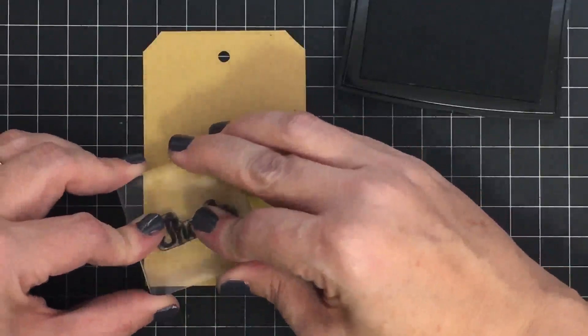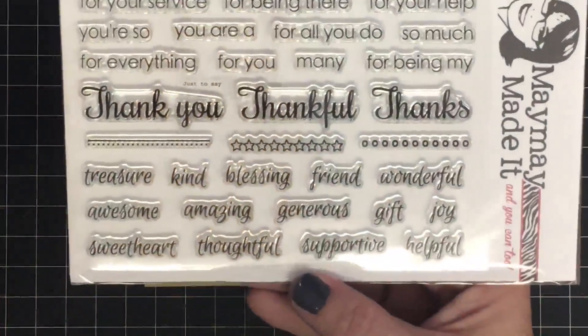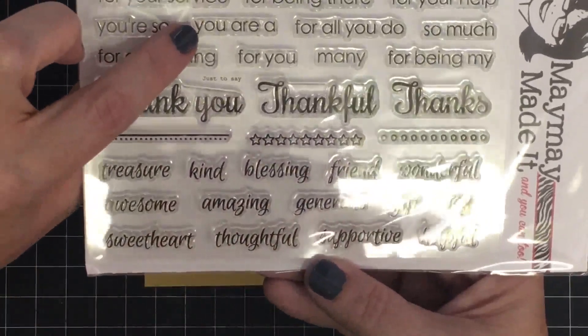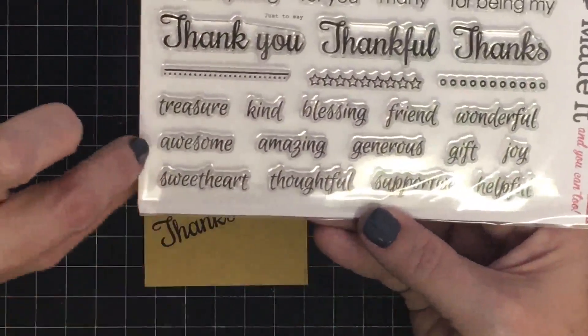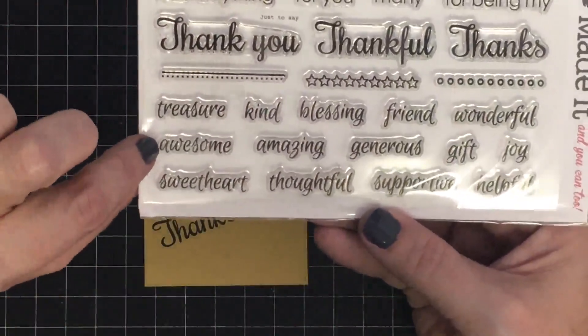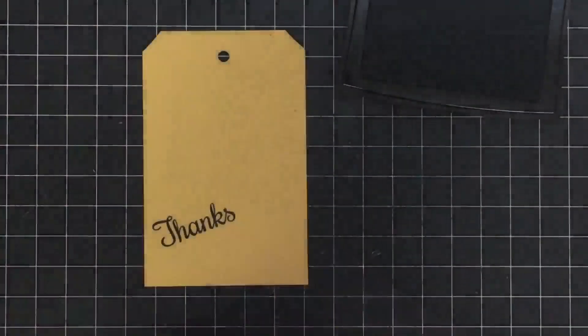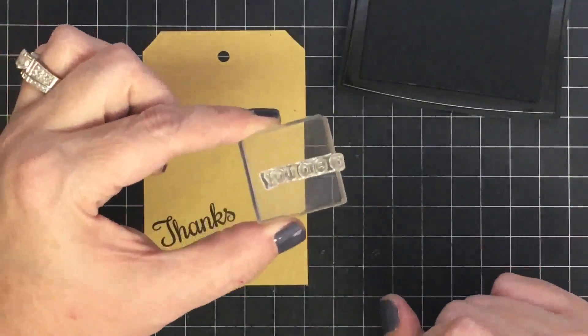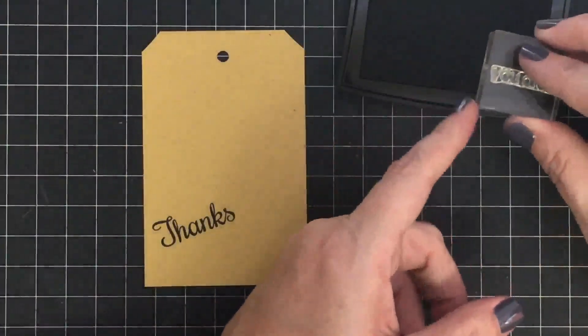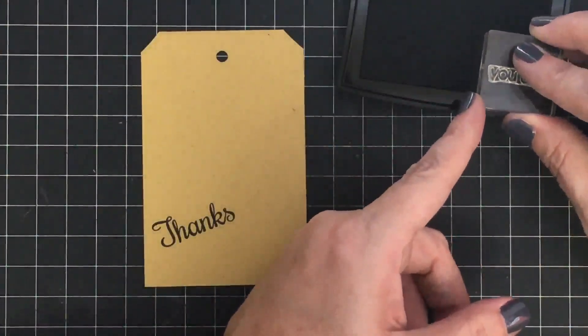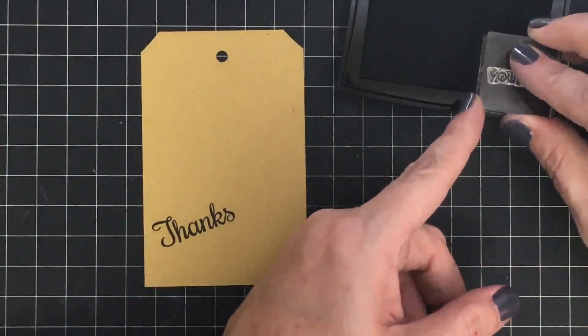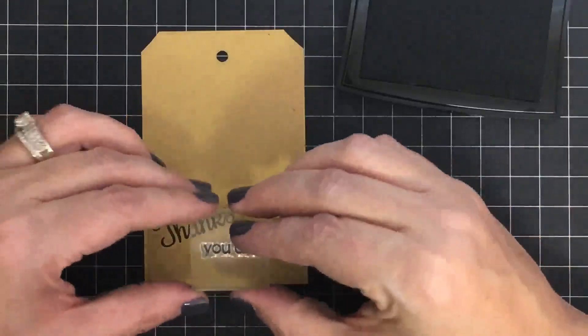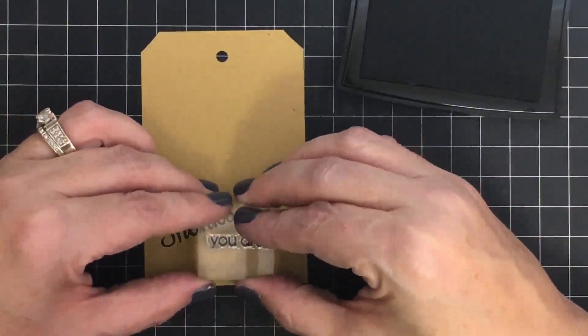I'm going back to this stamp set. Thanks is the first word I used. I'm going to take the one that says 'you are a' and the one that says 'awesome.' I know that doesn't go together, but I'm going to make it go together. Check this out. I've loaded 'you are a' on a stamp block, and I'm going to do what's called selective inking. I'm only going to ink 'you are' and I'm not going to ink the letter 'a.'